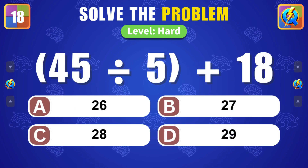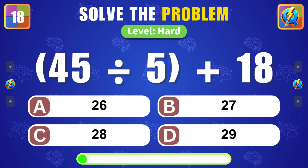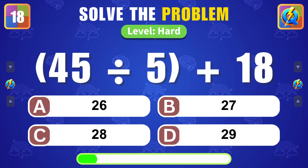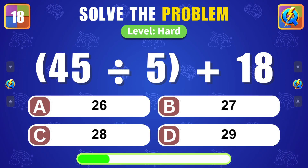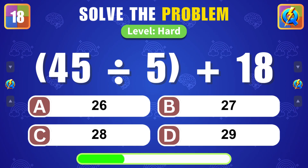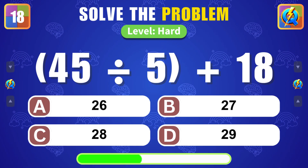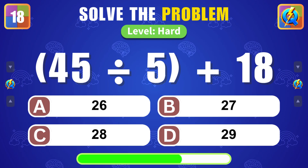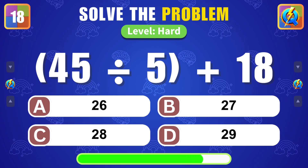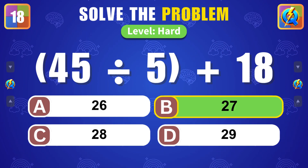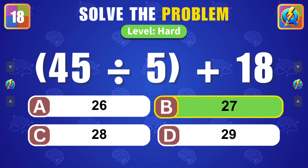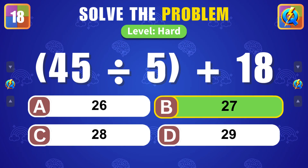What is the result of 45 divided by 5 plus 18? Well done, the answer is 27.